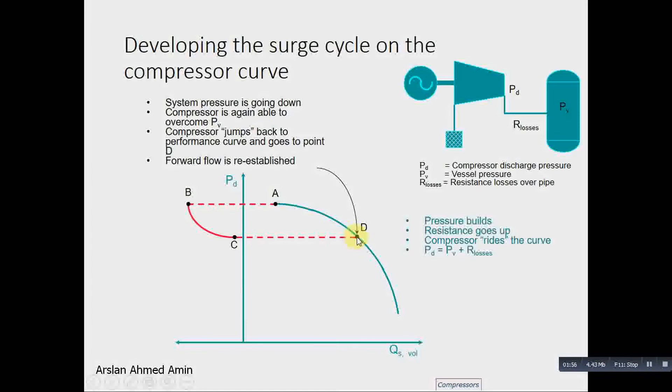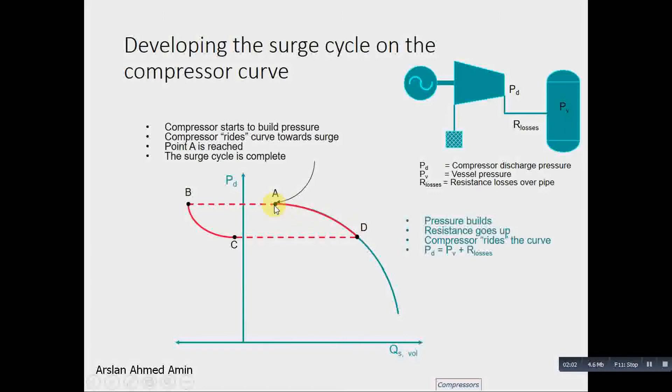At point D, when it reaches point D, it again goes to point A. So this is a typical surge cycle, which is faced by the compressor. This is mainly due to the buildup of high pressure at the header side. Compressor flow starts oscillating between these values.